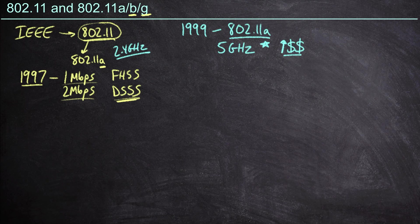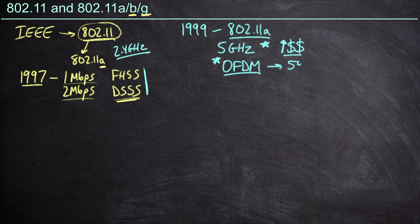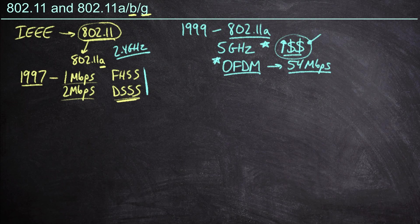On the plus side, 802.11a did migrate us away from FHSS and DSSS, and it introduced the concept of OFDM — orthogonal frequency division multiplexing. We'll cover this in more detail later, but ultimately this was a better way of doing communications, allowing us to get up to 54 megabits per second by leveraging it along with various modulation and encoding schemes. That's a huge enhancement — 54 megabits per second rather than 2 — but unfortunately, price is usually the biggest driver, and as a result, 802.11a saw remarkably little adoption.